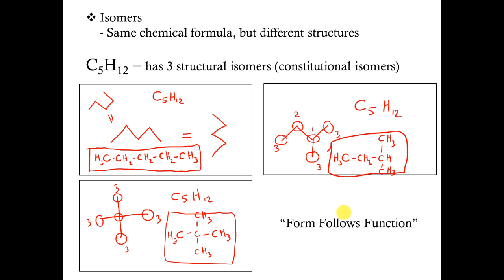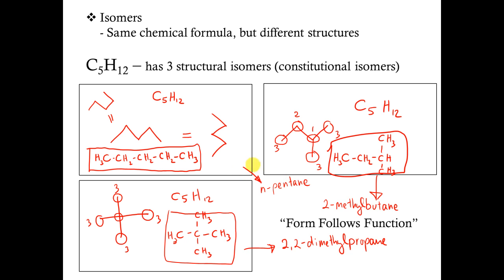Quite often in nature, form follows function. What that means is, depending on the form or structure of a molecule, you can have a totally different function. This becomes a problem in organic chemistry because even though all three structures have C5H12 as their chemical formula, their structures are totally different, which means their functions can be totally different as well. So how can chemists differentiate between three different isomers? The answer is with a very specific naming system — each isomer is given its own unique name, and each name provides specific details as to how the atoms are arranged in that molecule. This is the reason why organic compounds have such long technical names, but we will cover that in our next video tutorial.